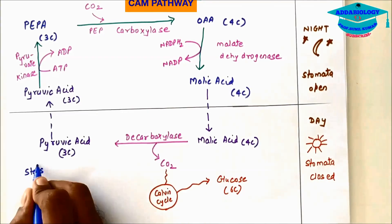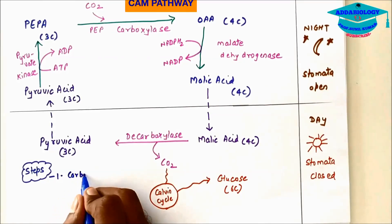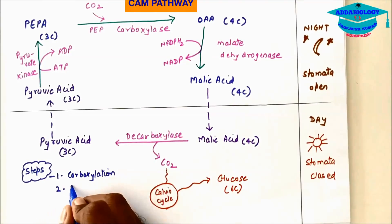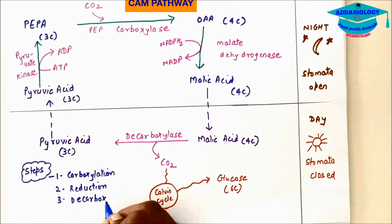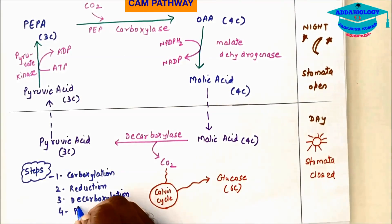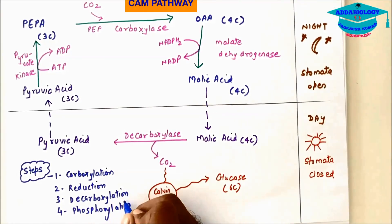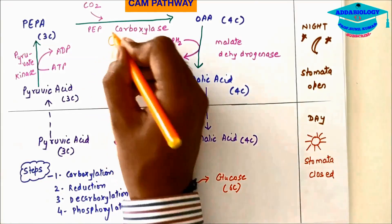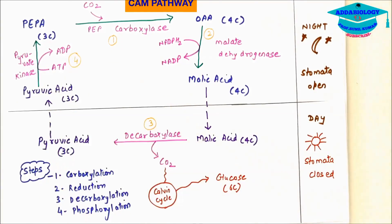What are the steps involved? Step number 1 is carboxylation. Step number 2 reduction. Step number 3 decarboxylation and step number 4 phosphorylation.